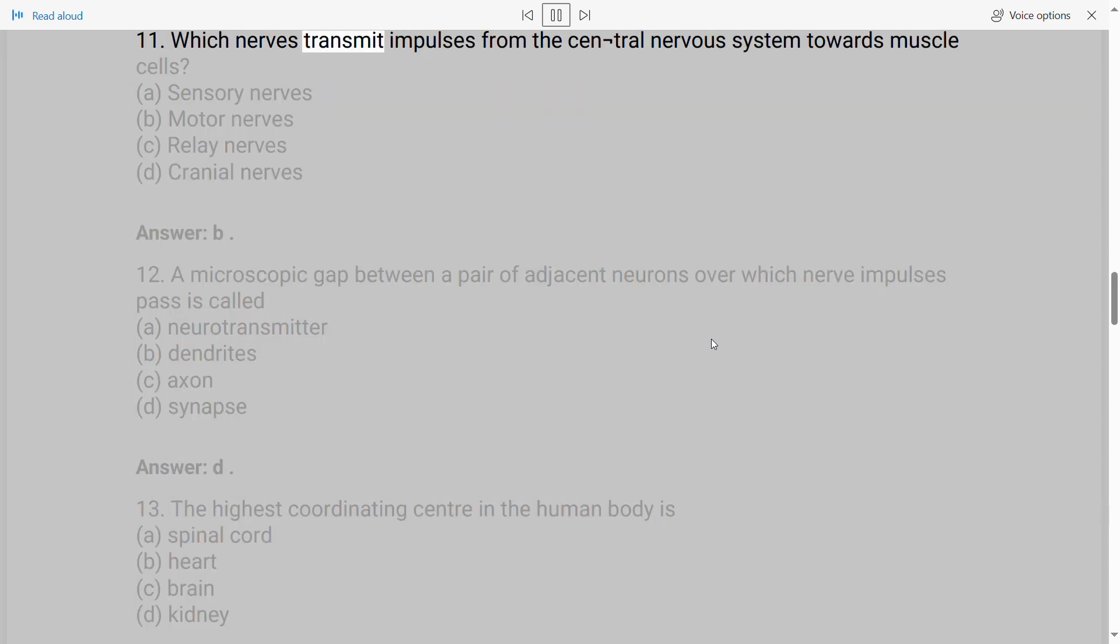11. Which nerves transmit impulses from the central nervous system towards muscle cells? A. Sensory nerves B. Motor nerves C. Relay nerves D. Cranial nerves. Answer: B.